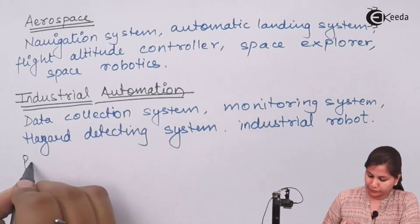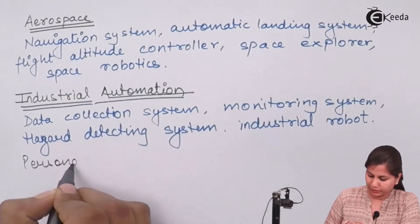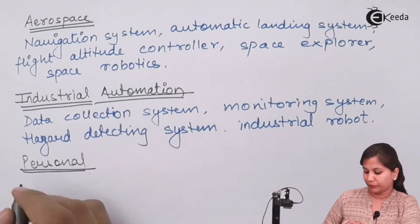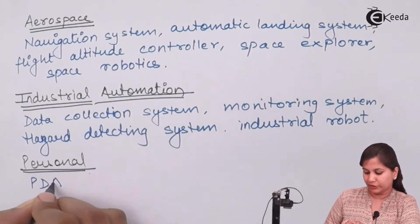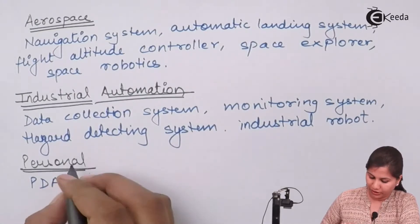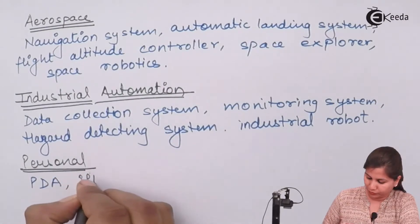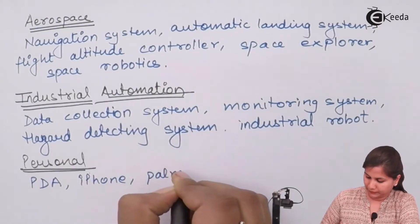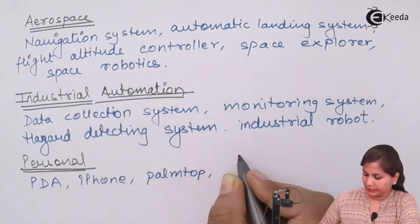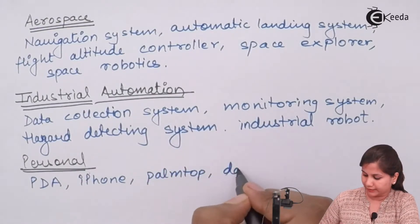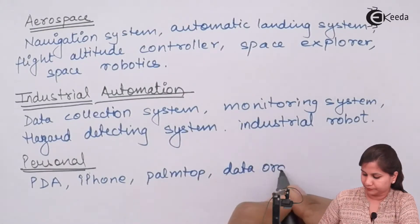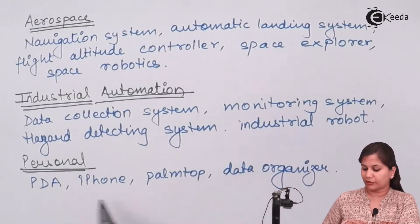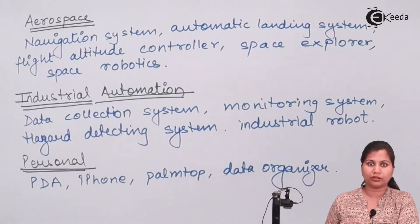For personal users, embedded systems are also used, like the PDA (personal digital assistant), iPhone, palmtop, and data organizer. These embedded systems are used for the personal use of the user.